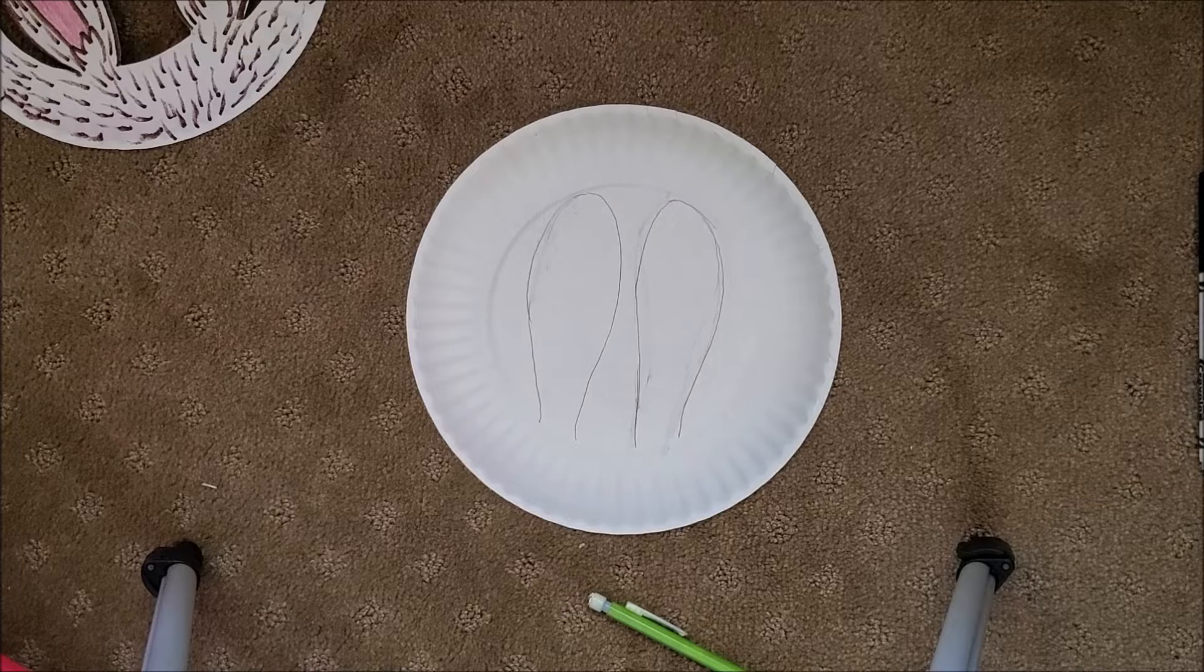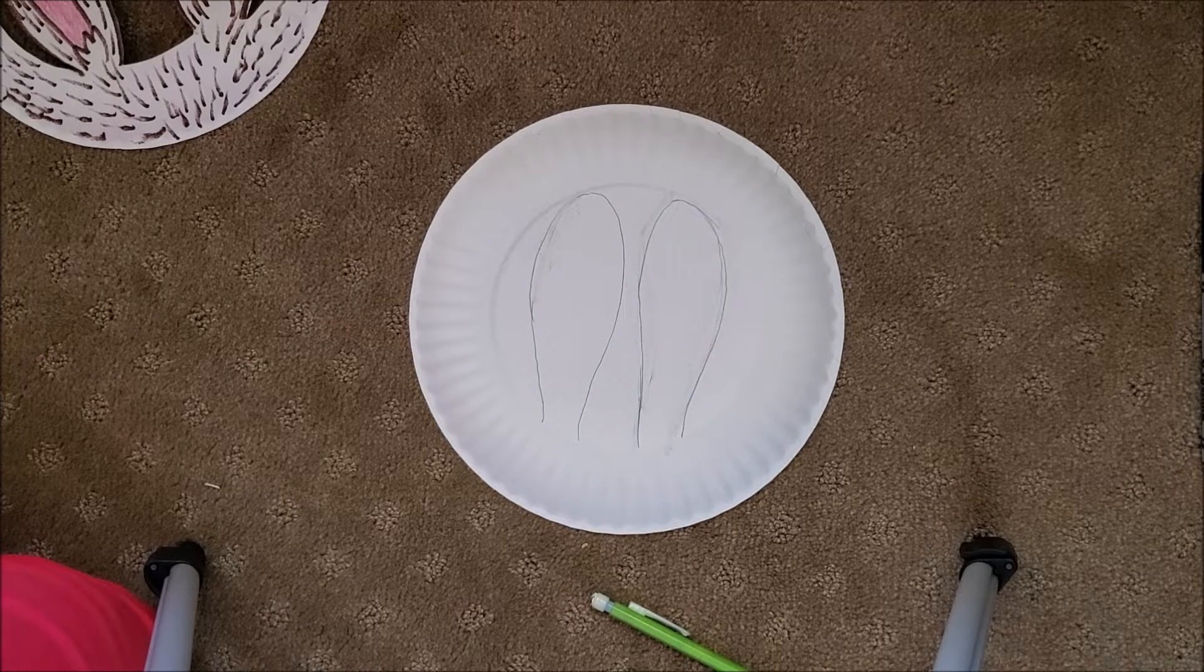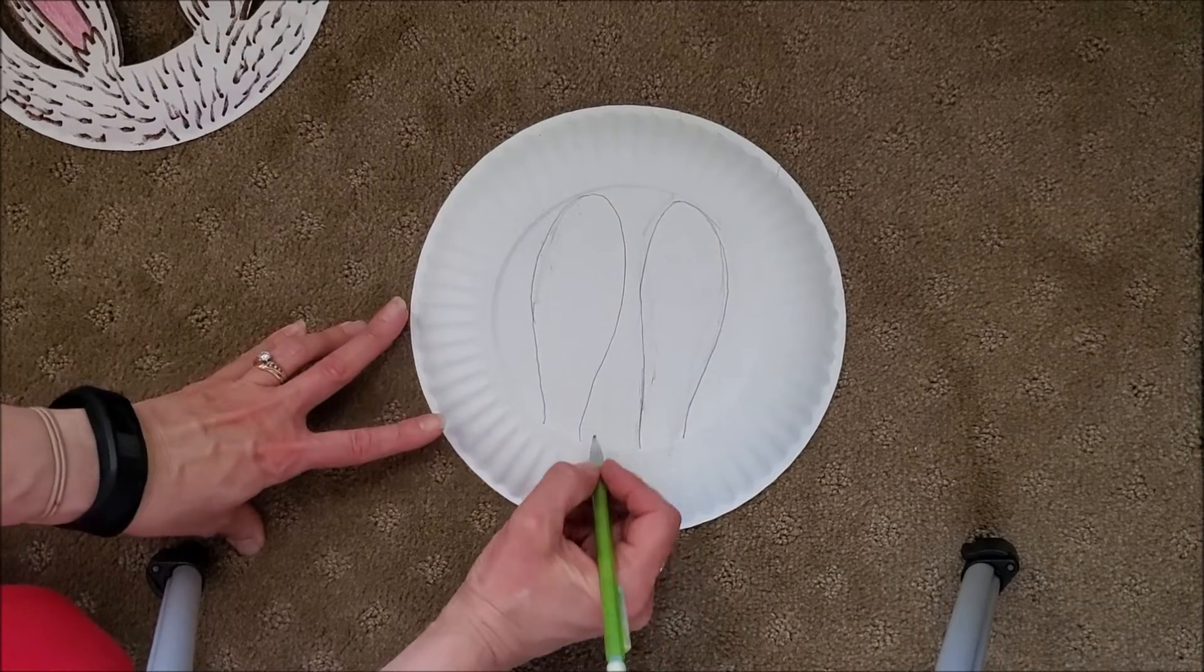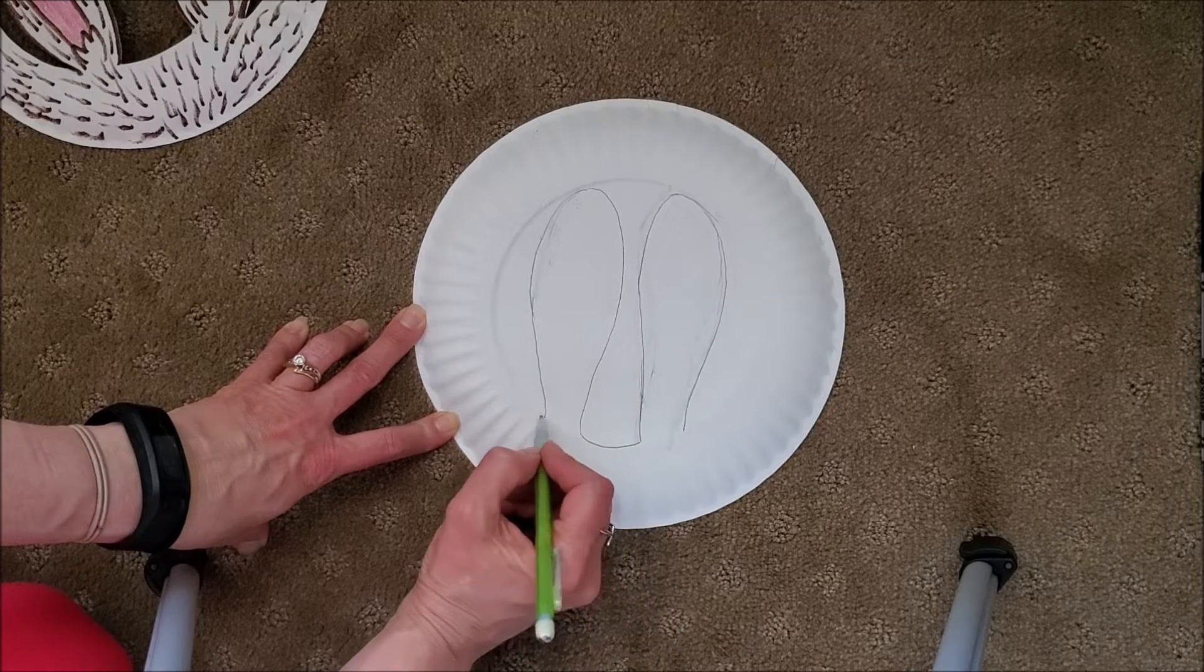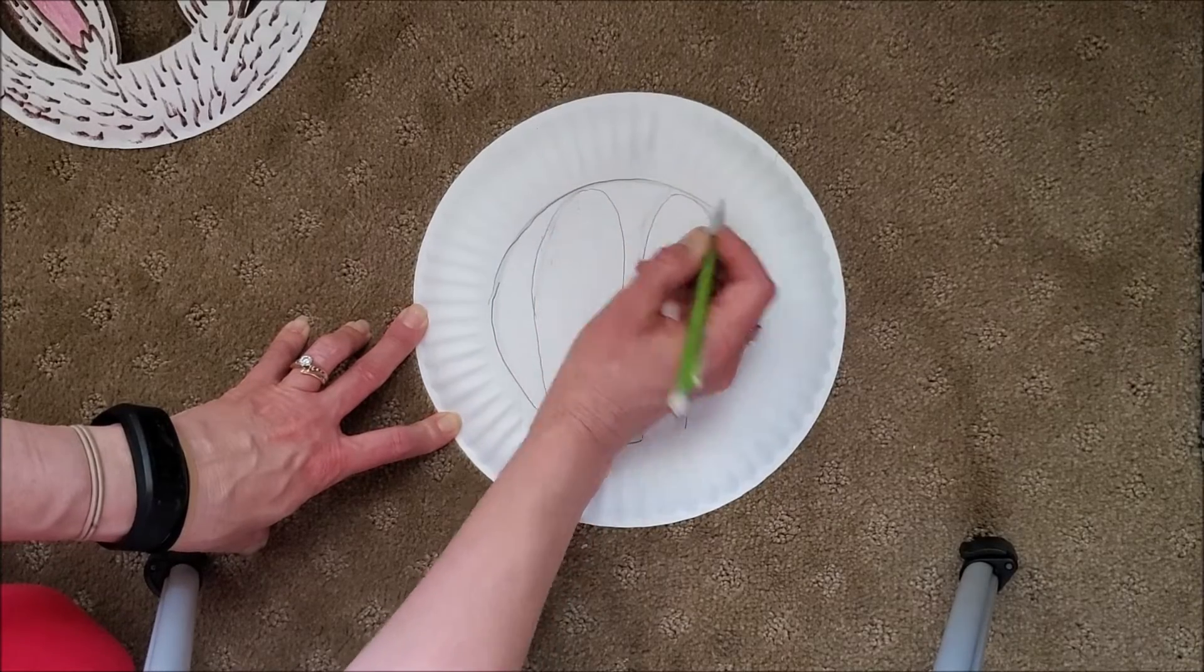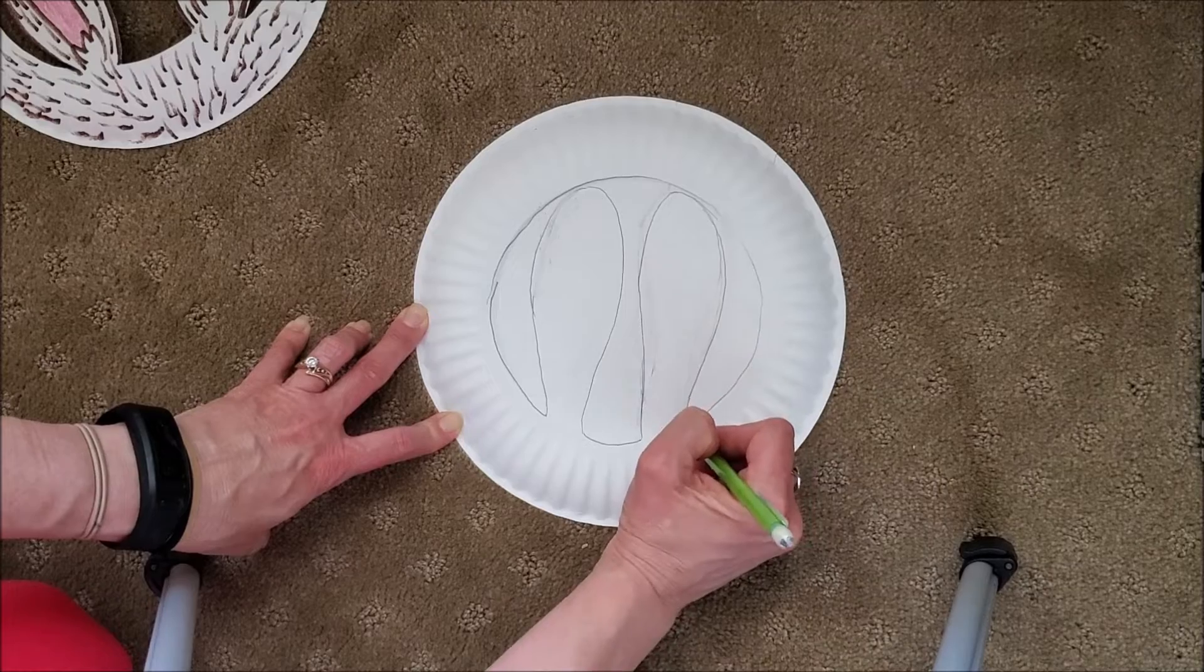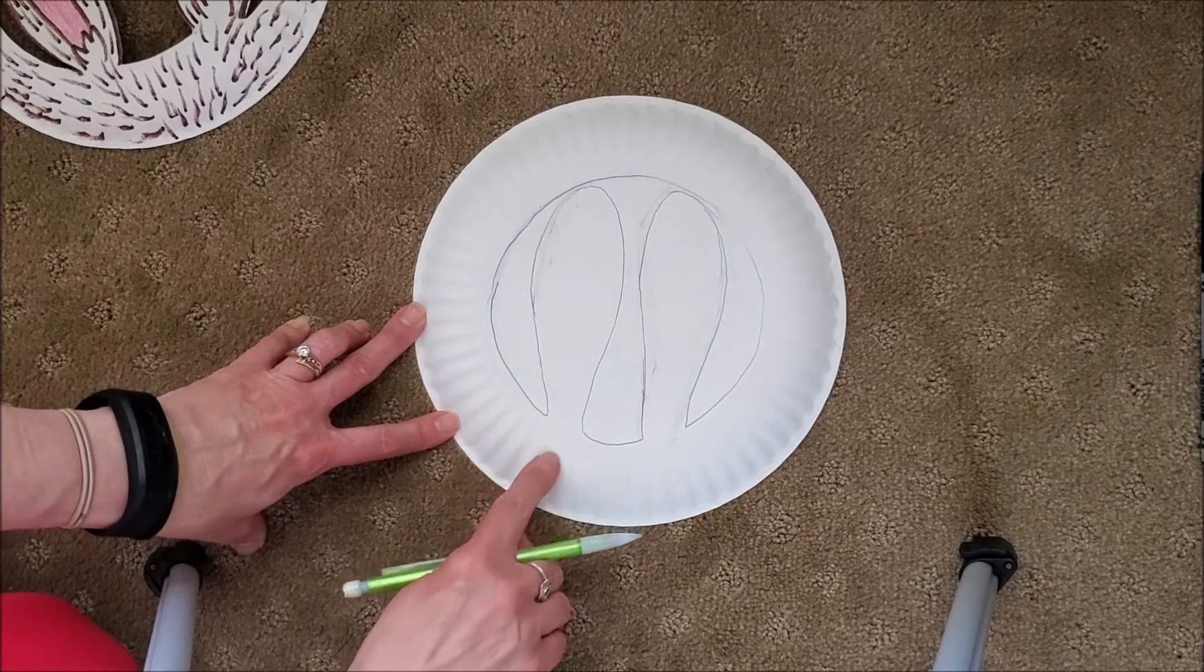So now that I know how I want the ears shaped, now I'm going to draw a line where I need to cut things out. So I'm going to be cutting out this front piece. And I'm going to be cutting out all of this circle that goes all the way around. So I would trace that with your pencil. And the only places where you're not going to cut it out is where the ears attach to this rim.